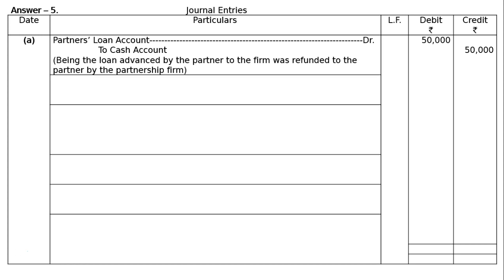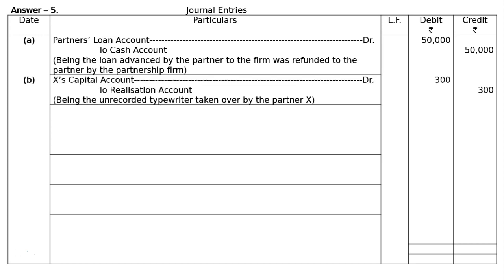Part B: Partner X takes an unrecorded asset — a typewriter — at rupees 300. Partner X took away the typewriter which was not recorded in the books at rupees 300. The entry is: X's Capital Account debited to Realization Account, rupees 300 each in both debit and credit columns, being the unrecorded typewriter taken over by partner X.